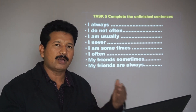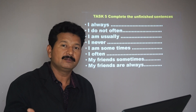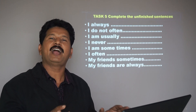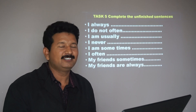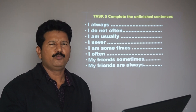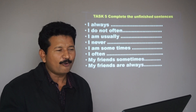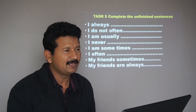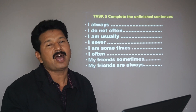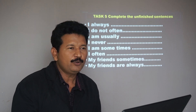Here is the last task: complete the unfinished sentences based on what you have learnt. For example: I always speak English; I don't often watch TV; I am usually busy or usually very happy; I never hurt anyone; I am sometimes very happy and sometimes very sad; I often talk to my friends; my friends sometimes come to my home; my friends are always helpful. This is how you continue talking about everyday life.